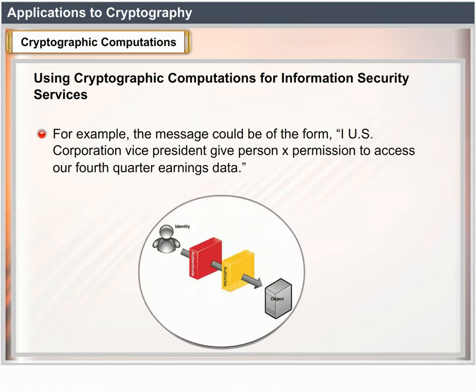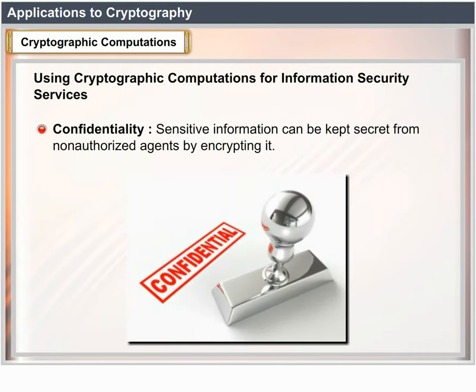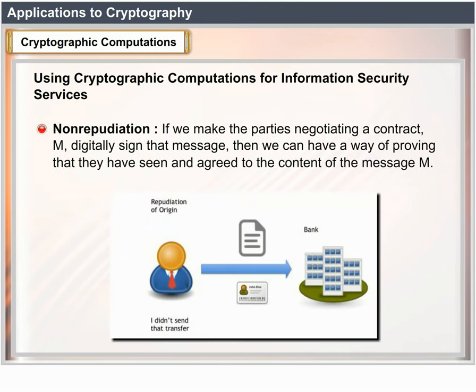Alternatively, the holder of a right to sensitive data or computations can digitally sign a message C that authorizes a user to perform certain tasks. For example, the message would be of the form: 'I, U.S. Corporation Vice President, give person X permission to access our fourth quarter earnings data.' Confidentiality: sensitive information can be kept secret from non-authorized agents by encrypting it. Non-repudiation: if we make the parties negotiating a contract M digitally sign that message, then we can have a way of proving that they have seen and agreed to the content of the message M.